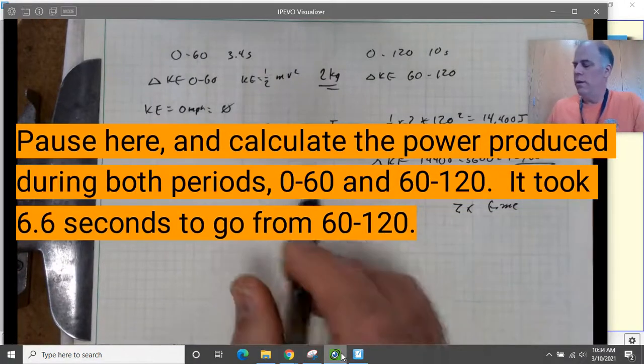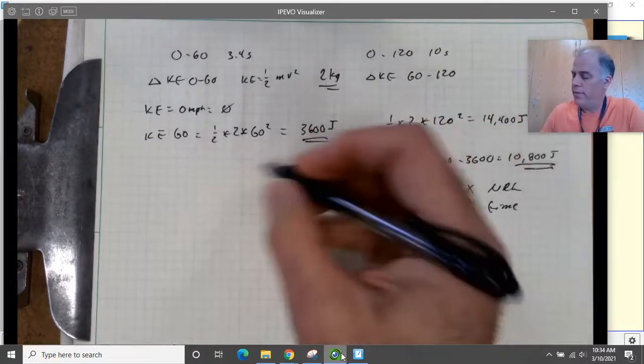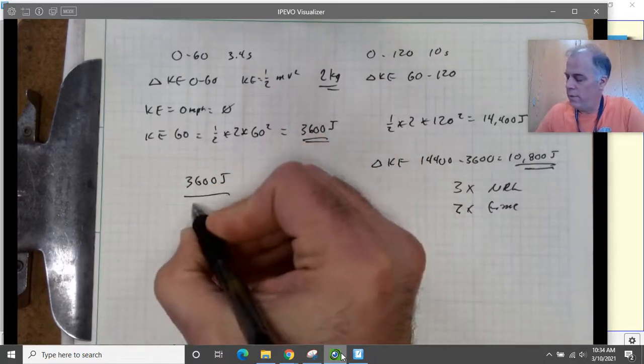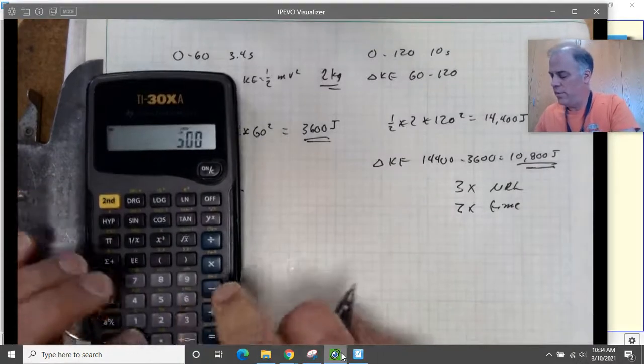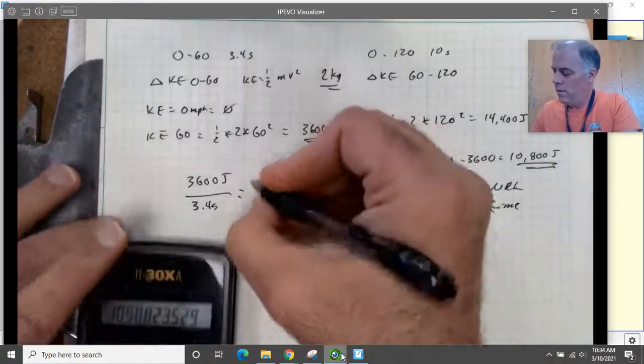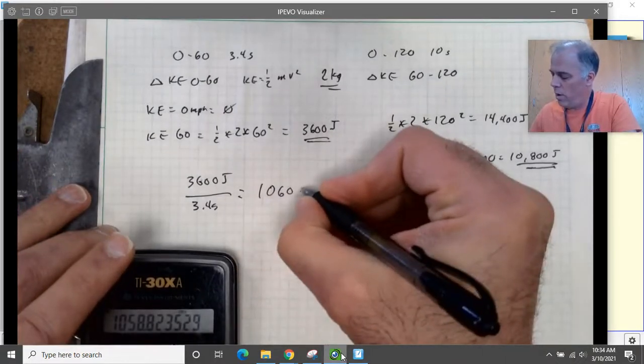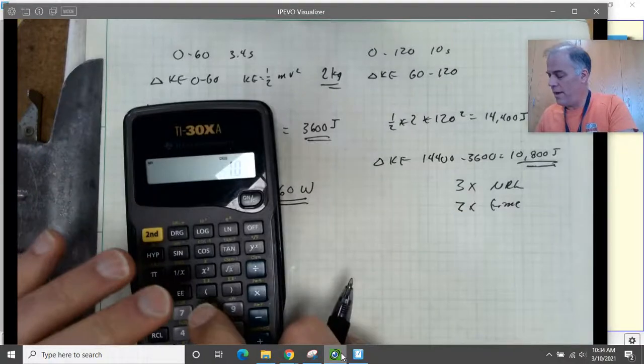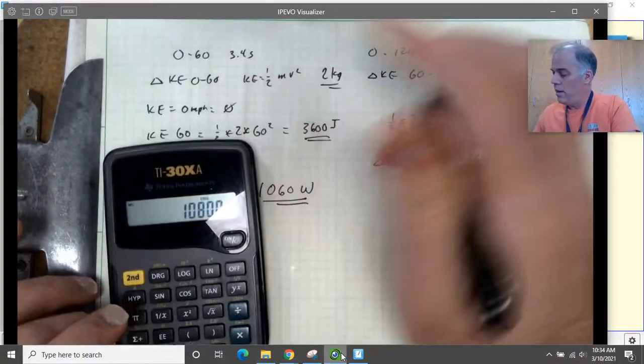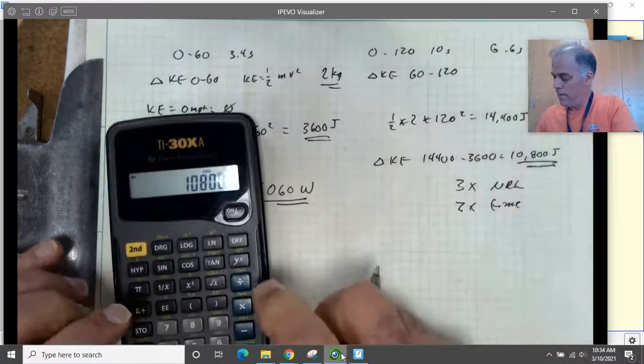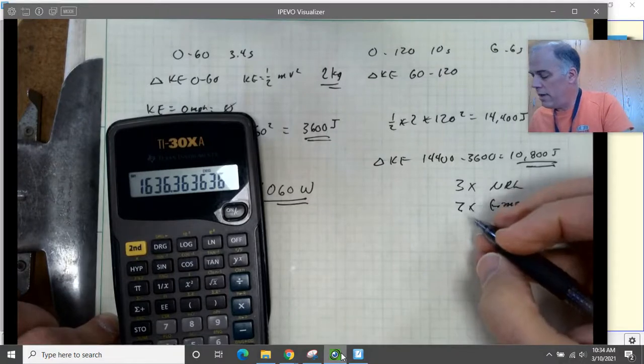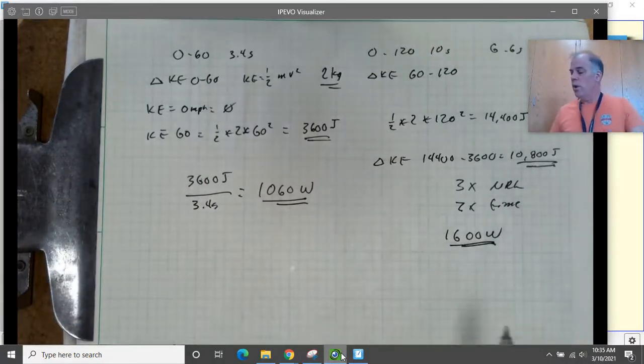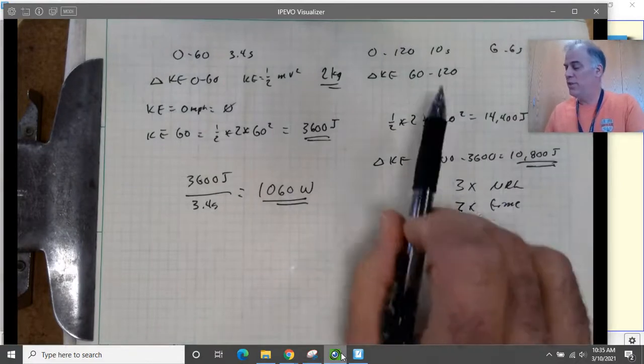And that's might be a little bit surprising. Let's talk power. The power that the engine produces is 3,600 pseudo joules here in 3.4 seconds. And that is equal to 1,060 watts. And the power that the engine produces during the second phase here is going to be 10,800 joules divided by 6.6 seconds, which is 1,600 watts.